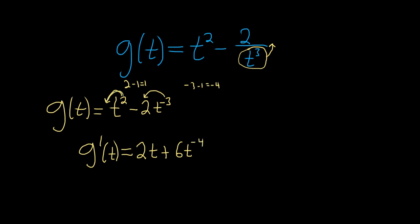So it'll just be 2t, and then negative 3 times negative 2 is positive 6. And then subtracting 1 gives us negative 4. And that's it.